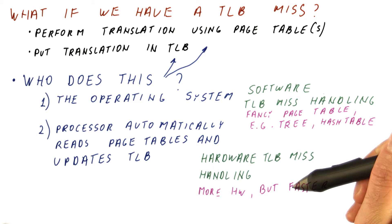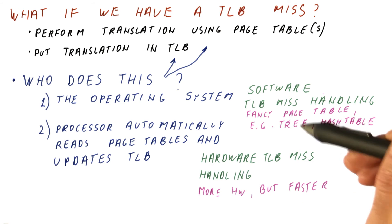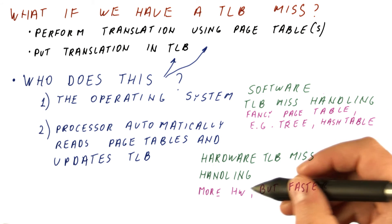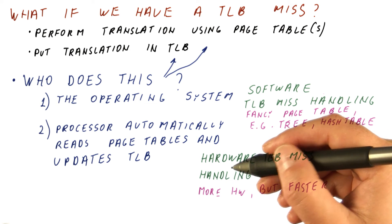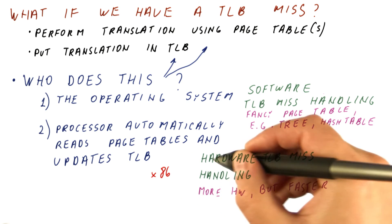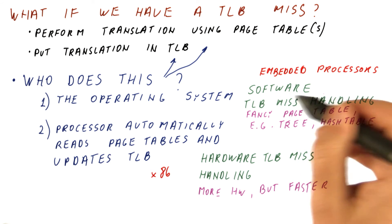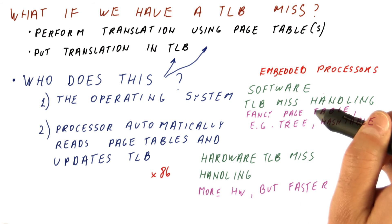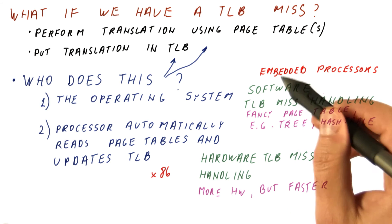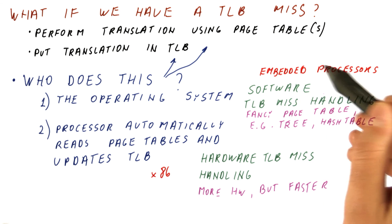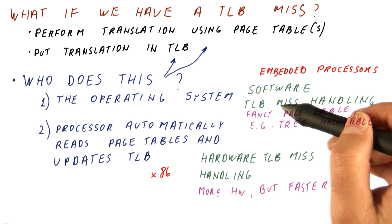But it is faster than software handling. This is treated kind of like a cache miss, whereas with software handling we need to execute a little program to fill the TLB. So because this is faster and because hardware is cheap these days, most high performance processors, like x86, will use this approach of hardware TLB mishandling. But some embedded processors will use software TLB mishandling, because they are concerned about the hardware cost and want to be as simple as possible. Also, in these embedded processors, TLB misses occur less frequently because they are running more regular applications.